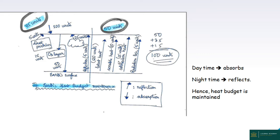Radiation accounts for 15 units going back up, with 5 units as direct radiation. The overall balance shows 50 units absorbed by the surface and returned to maintain the heat budget, and the ozone layer plays a role maintaining the system at equilibrium. This is how the height of the heat budget is maintained.